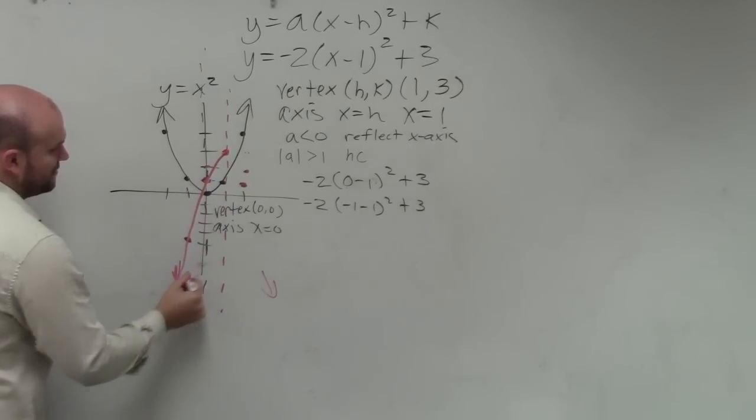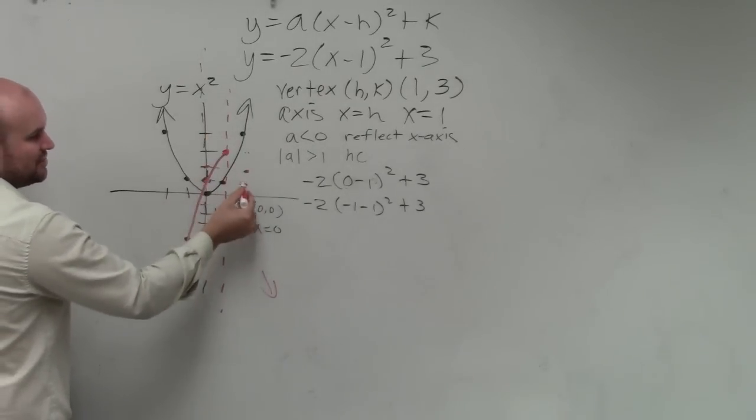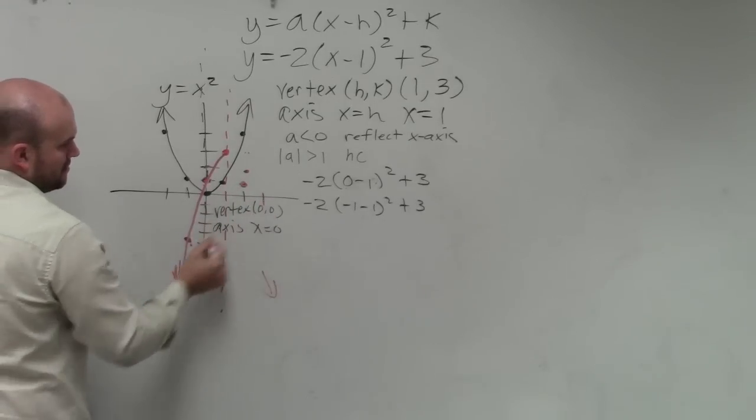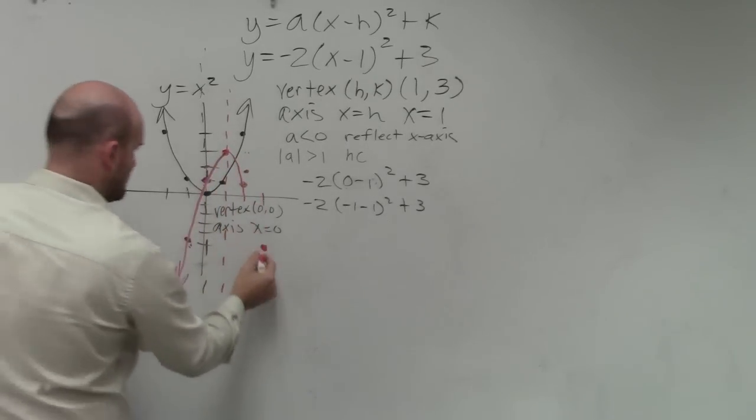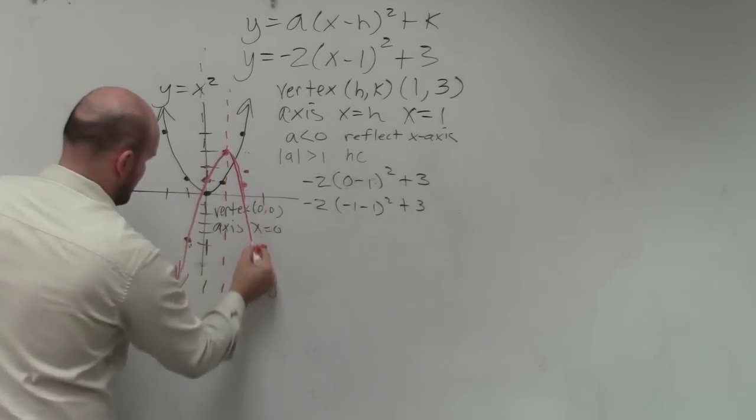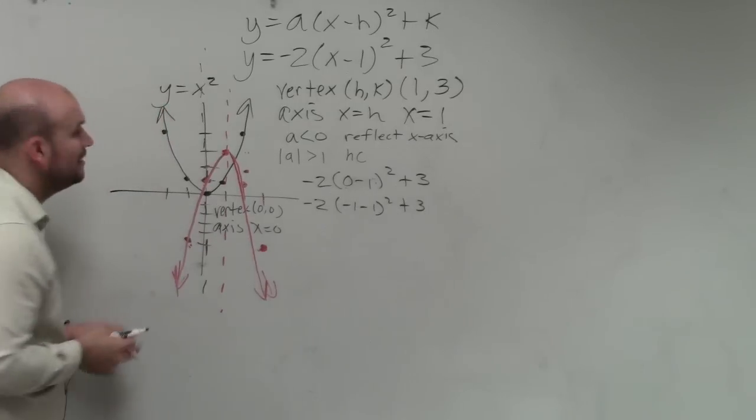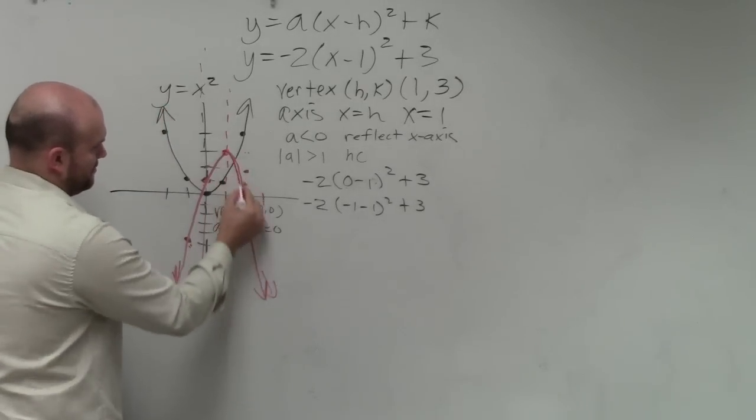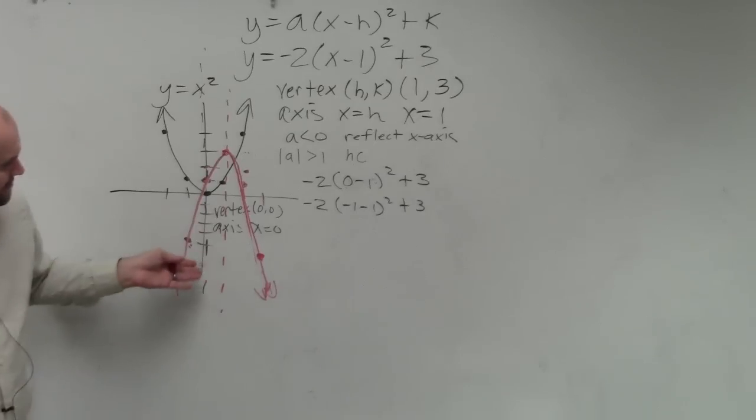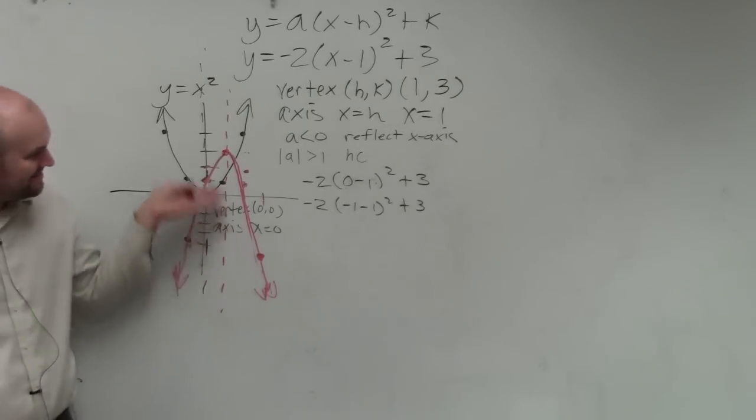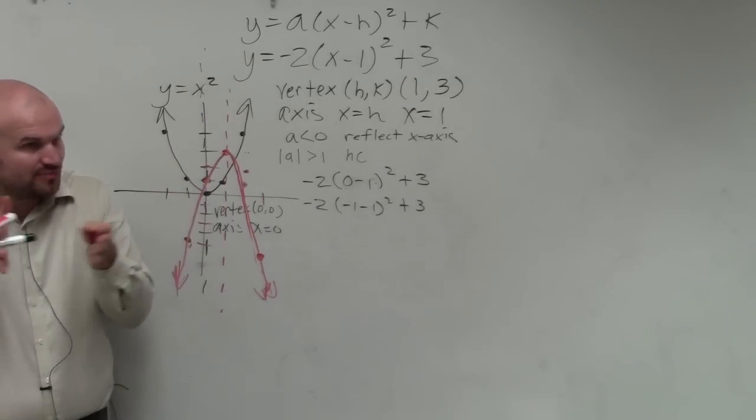Basically, you guys can see that this graph goes like this. And then, all you simply need to do is, with the axis of symmetry, you just reflect the points across the axis of symmetry. My graph's a little bit off. But you guys can see that that is basically my graph. It's going to be opening down, because a is negative. And the 2 horizontally compresses the graph.